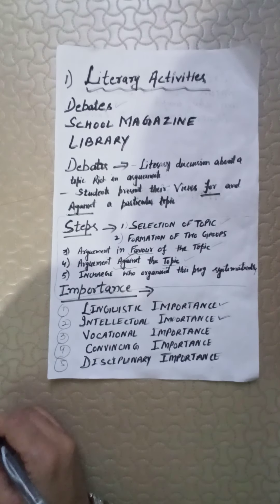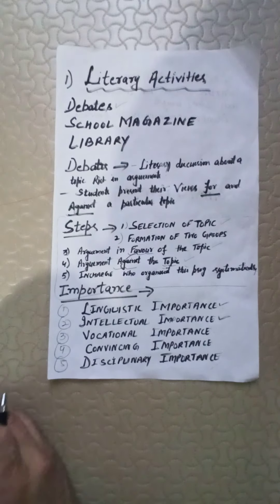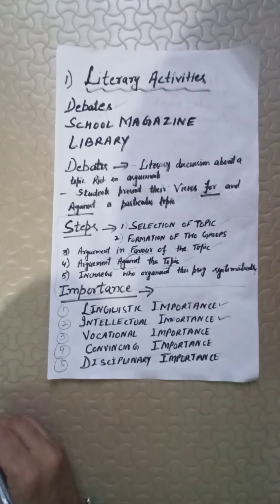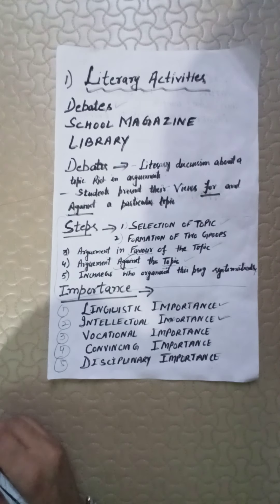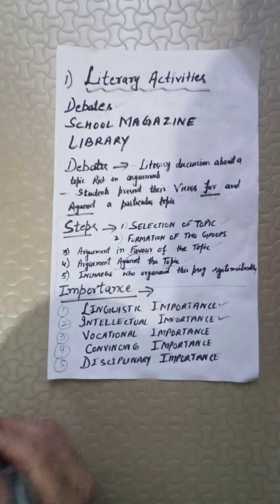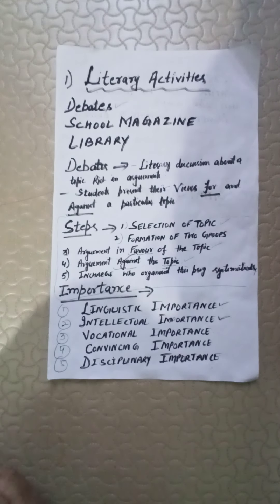Welcome again, students. I am Urvashi Parihar, Senior Lecturer in Education. In my last video, students, you studied about the four major types of co-curricular activities. First is literary activities, second is aesthetic and cultural activities, third is social activities, and fourth is physical activities.